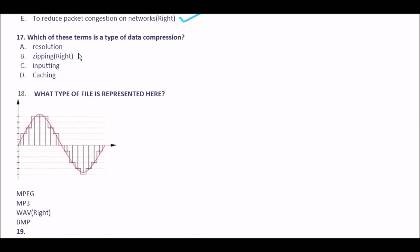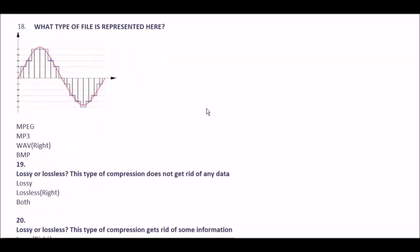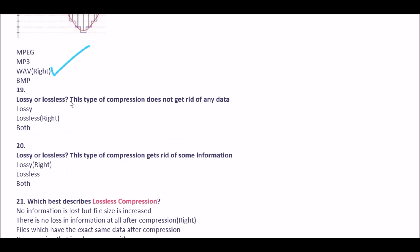Next question: what type of file is represented here — a sine wave is shown. Option A MPEG, option B MP3, option C WAV, option D BMP. The right answer is option C: WAV. A sine waveform file is represented.